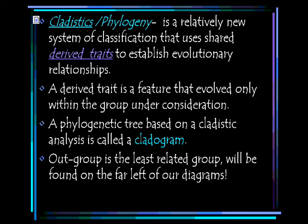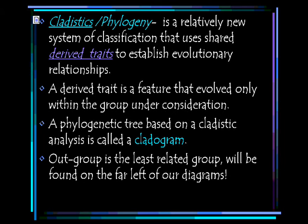Cladistics is the more updated version of classification now. It is a relatively new system based on derived traits that establish evolutionary relationships. A derived trait is a feature that evolved within a group under consideration. A phylogenetic tree, or cladogram, is based on these evolutionary relationships and shows how organisms are related to one another based on those characteristics. An out group is the term used to describe the least related group, and we will always find those on the far left of our diagrams.